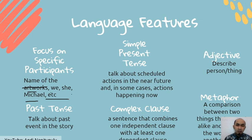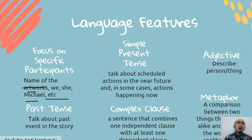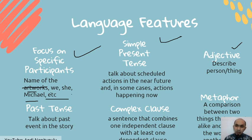Next is simple present tense, because when you review something you talk about scheduled actions or actions happening now. After that, adjective is very important to give your opinion — it's used to describe a person or thing.